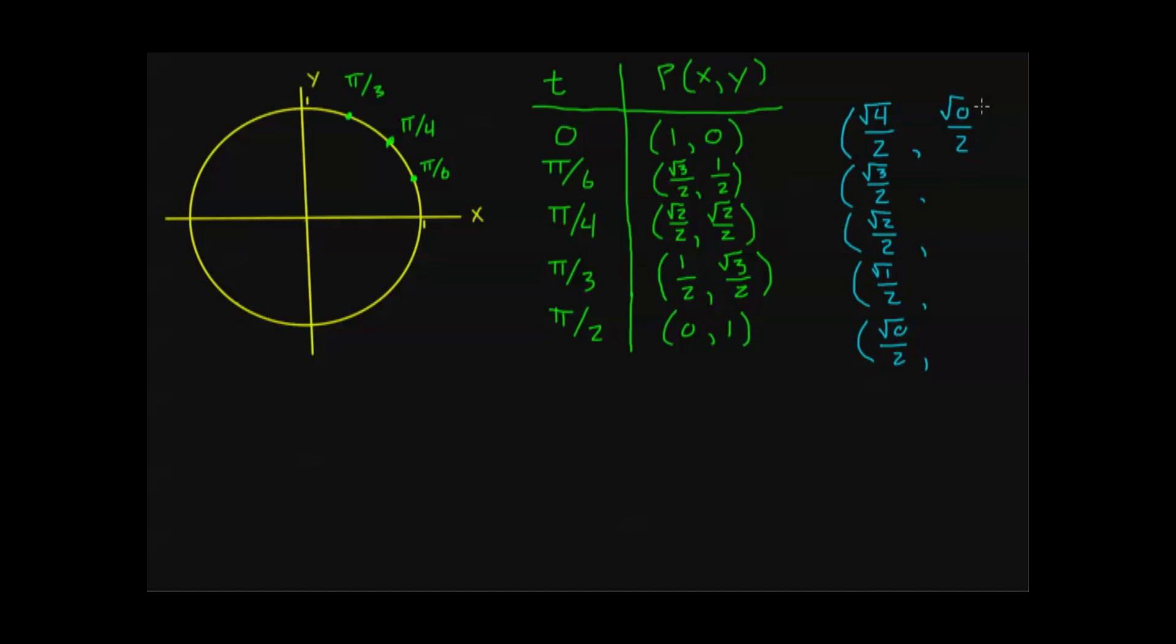So I can write my y values as √0/2, √1/2, which is the same as 1/2, √2/2, √3/2, and √4/2, which of course, as we just discussed, is the same thing as 1. So this is a little trick you can remember if this helps you, or if you're okay just remembering these as they are, this is fine too. And once we get into triangles, I'll have even more tricks to help you to remember these values.